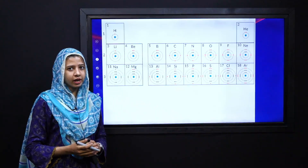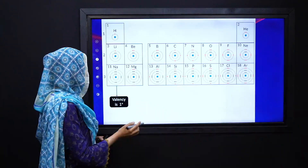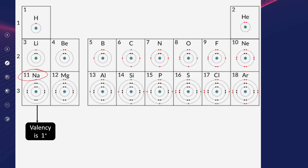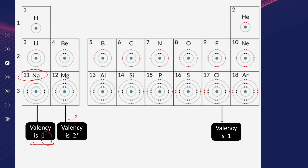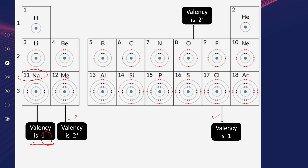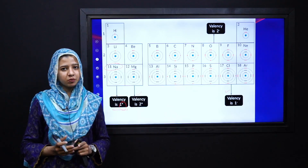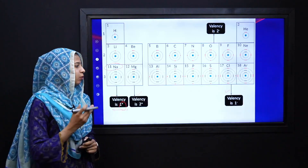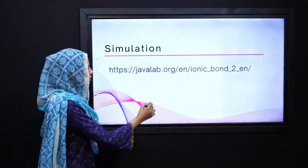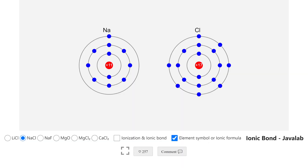Hum kuch examples ko dekhte hain. Hamare paas sabse first example jo hai wo hai sodium ki, jisme humne dekha ki ye ek electron ko donate karta hai, so the valency of sodium is one plus. Isi tarah magnesium ki valency two plus hai, chlorine ki valency one minus hai, jabke oxygen ki two minus hai. These valencies tell you whether the atom is accepting or donating electrons. We can better understand this concept with the help of a simulation — here is the link of the simulation, you can easily open this by clicking on the link.